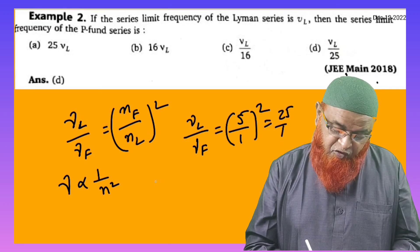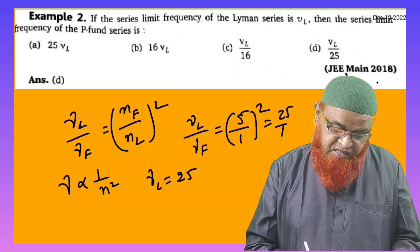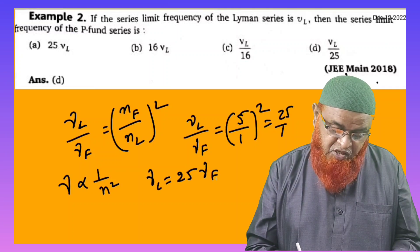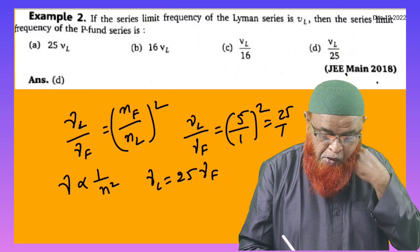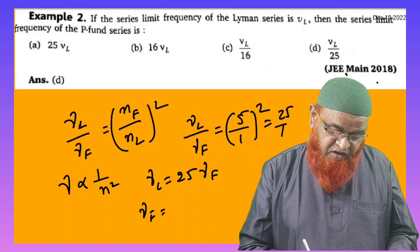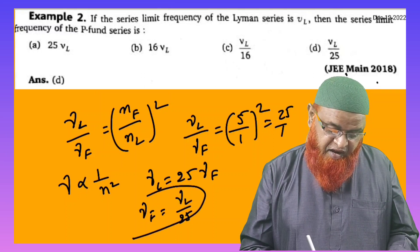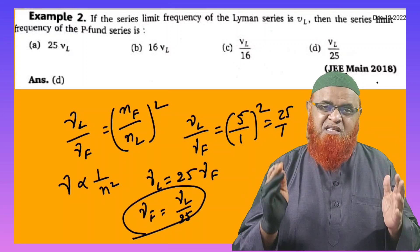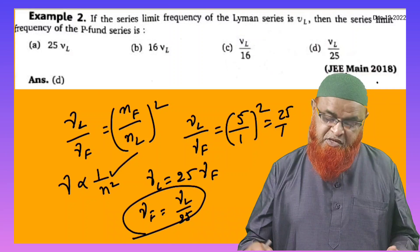So therefore frequency of Lyman series is 25 times the frequency of Pfund series. We can say, or we can also write frequency of Pfund series is equal to frequency of Lyman series divided by 25. So these two relations we're getting just by single-step method. That is this one. Thank you very much.